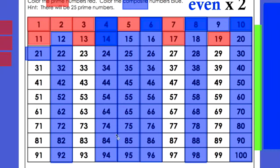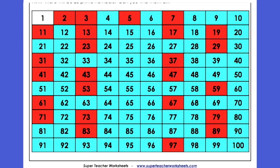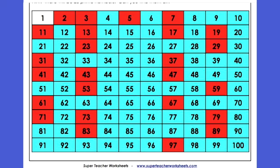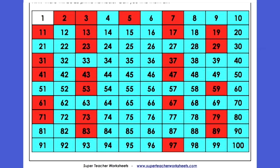So this is a chart of the prime and composite numbers. In years past I had you color these in during class, but I'm going to send everybody this sheet to print out. All the blue numbers are composite, and all the red numbers are prime. If you can print this out, you'll have it to help you with the following lessons.